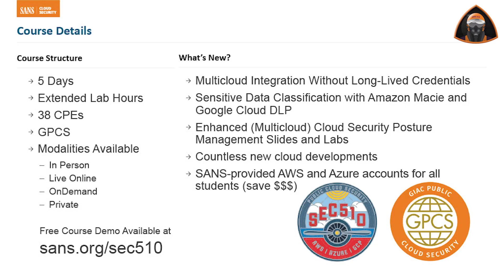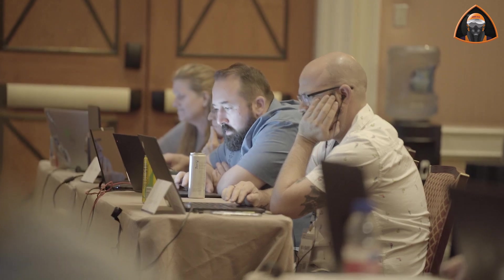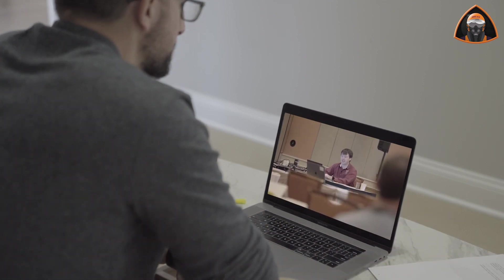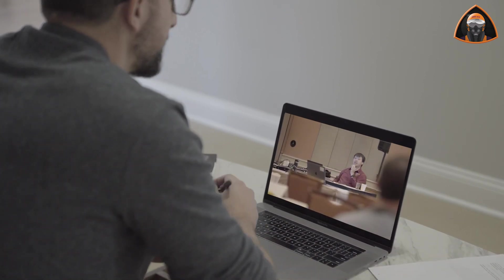SEC 510 has five great sections that will help you navigate multi-cloud security. It has 20 lab exercises and many more bonus challenges during extended hours. It also has a GIAC certification associated with it — the GIAC Public Cloud Security, or GPCS. You can take SEC 510 in a variety of different modalities: live in person with an instructor, live online with an instructor remotely, on-demand at your own pace with help from subject matter experts, and private classes for large organizations.